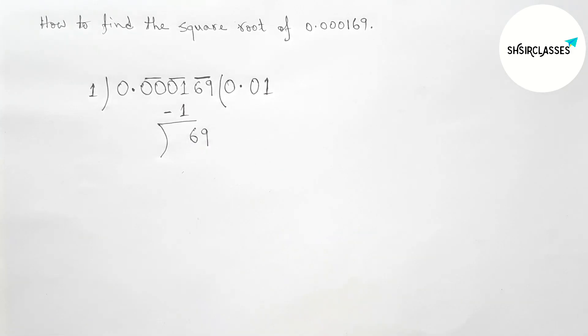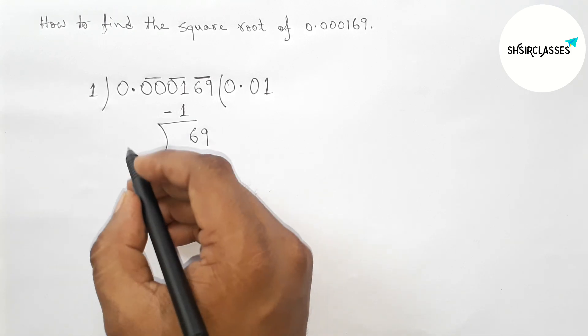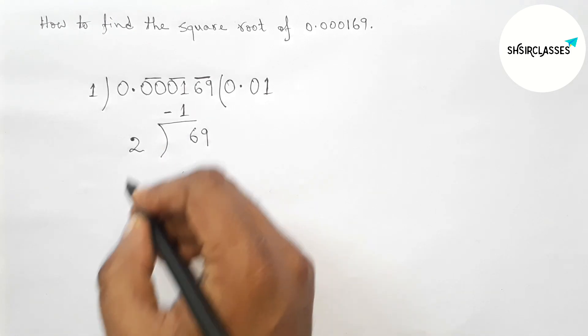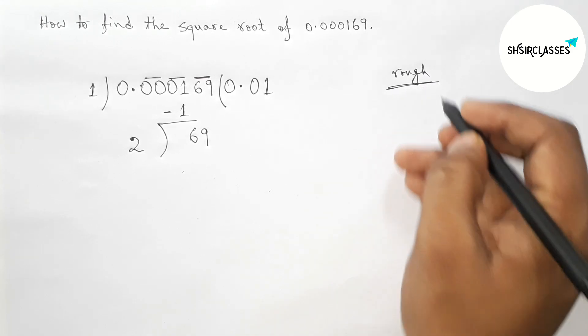Drawing here the division line. Next, taking double of 1 and write here: double of 1 equals 2. Now, roughly discussing here some important calculation.